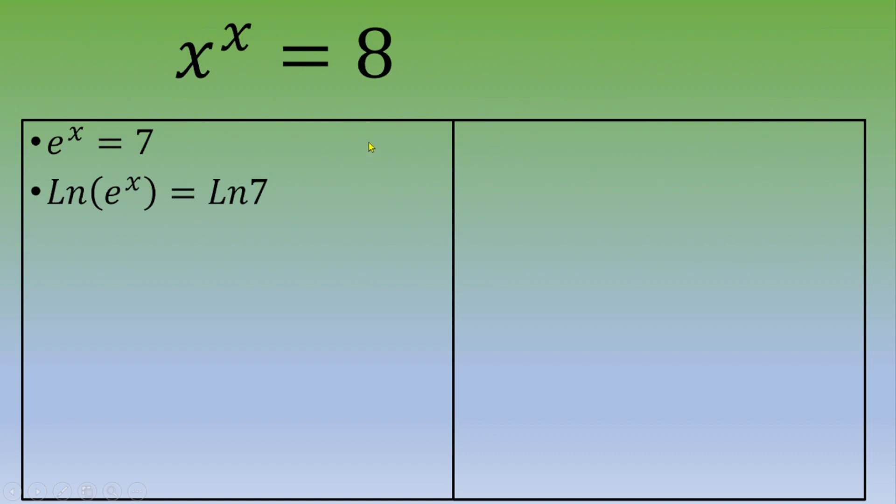And we know that natural log of e, that's going to end up with x equals natural log of 7. And we can leave this natural log of 7 as it is. No need to approximate or to give a decimal answer.